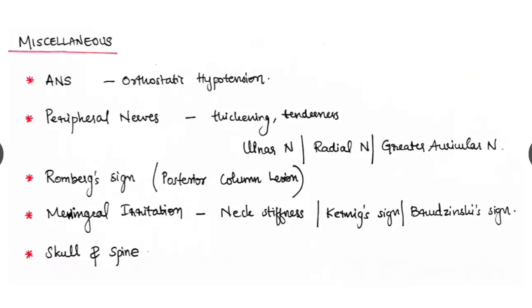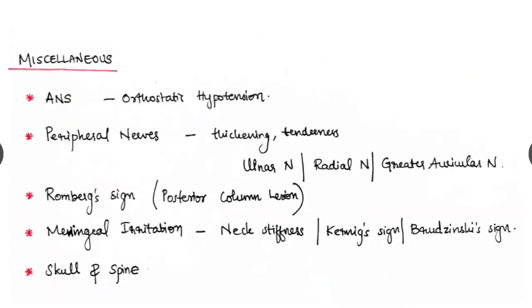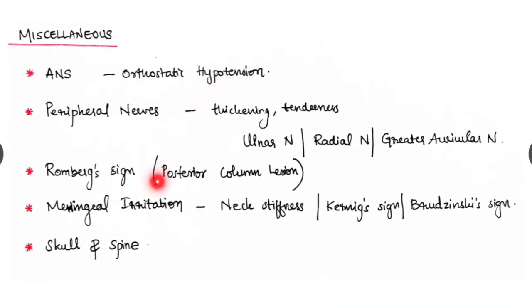The miscellaneous part where we check the autonomic nervous system. And we check for any thickening or tenderness. The commonly checked peripheral nerves. And also we have to learn the conditions with thickened or tender peripheral nerves. Common example is leprosy.